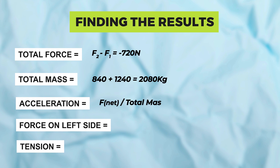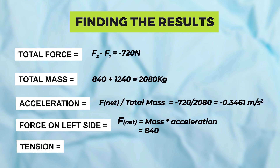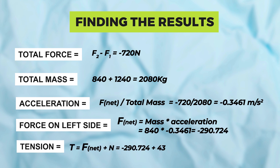Total force: F2 minus F1 equals minus 720 N. Total mass: 840 plus 1240 equals 2080 kg. Acceleration: F_net over total mass equals minus 720 over 2080, so total acceleration is minus 0.3461 m/s². Force on the left side: F_net equals mass times acceleration, where mass is 840 and acceleration is minus 0.3461, giving minus 290.724 N. Tension T equals F_net plus N, where F_net is minus 290.724 and N is 4320, so total tension is 4029.276 N.